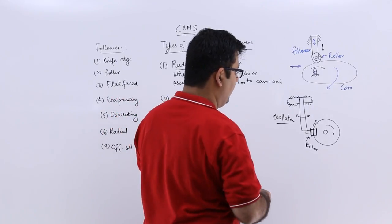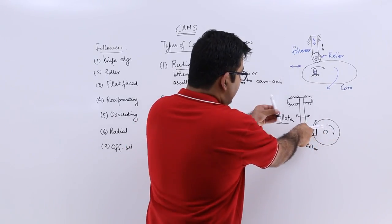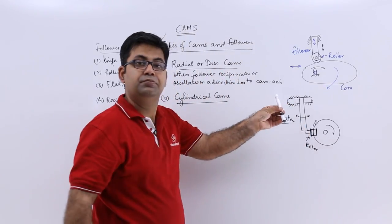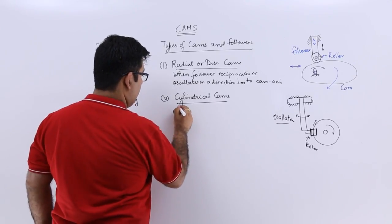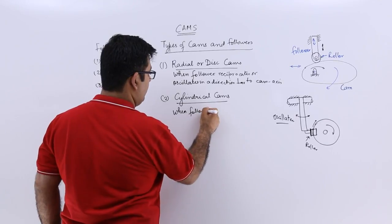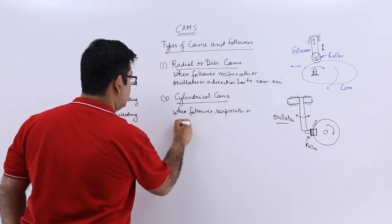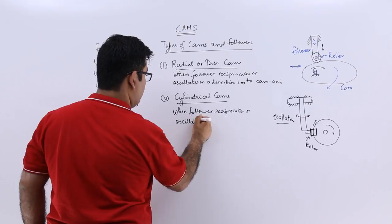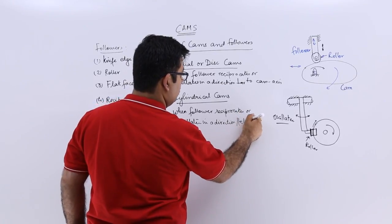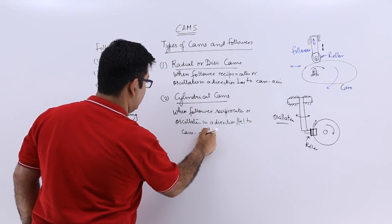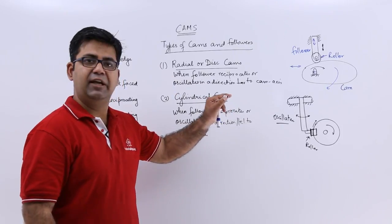In the cylindrical cam, the axis of the cam and the plane in which the follower is oscillating are both parallel. So when the follower reciprocates or oscillates in a direction parallel to the cam axis, it is called a cylindrical cam. So those are the types of cams.